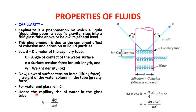With theta equal to zero, equating the lifting force and gravity force gives: circumference pi*d times sigma times cos(theta) equals (pi/4)*d² times h times specific weight w. Solving for h, we get h = 4*sigma*cos(theta) / (w*d). Since cos(0) = 1, the final equation for capillary rise in water is h = 4*sigma / (w*d).